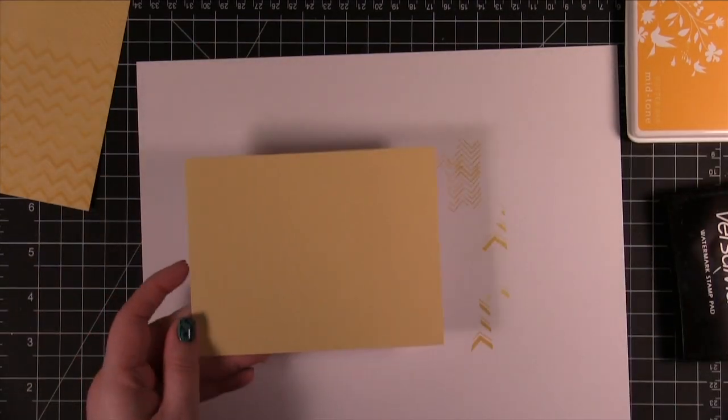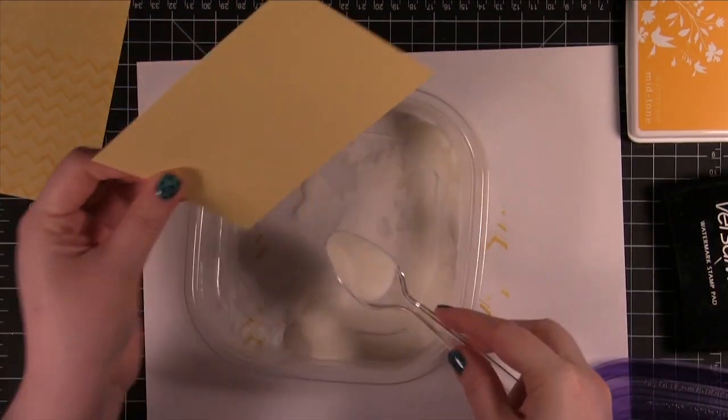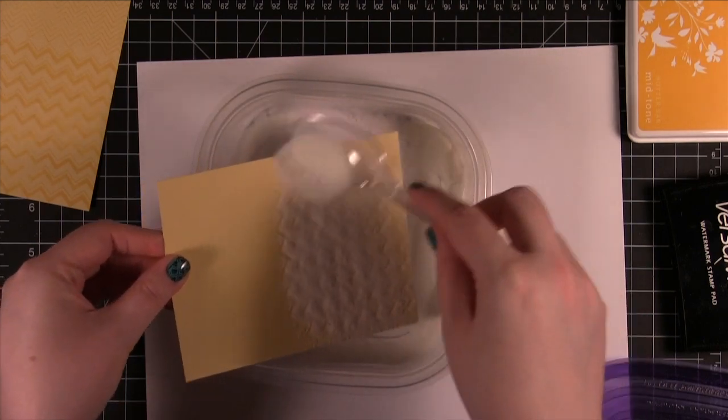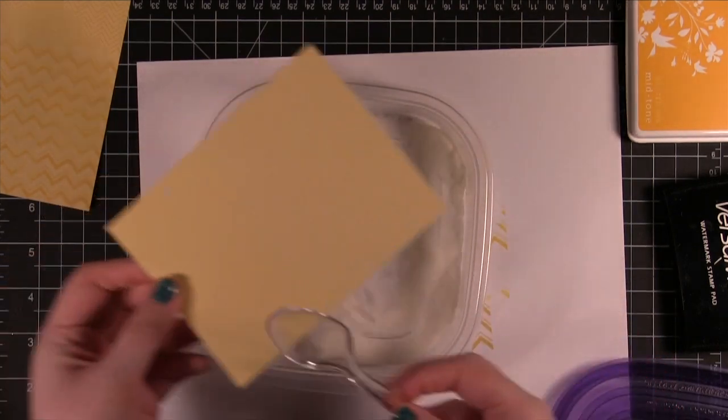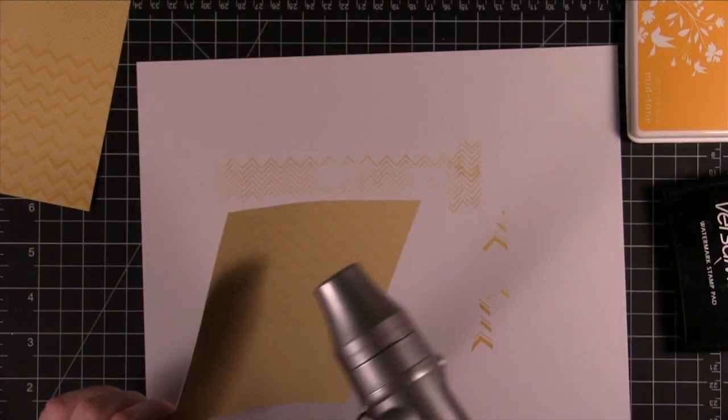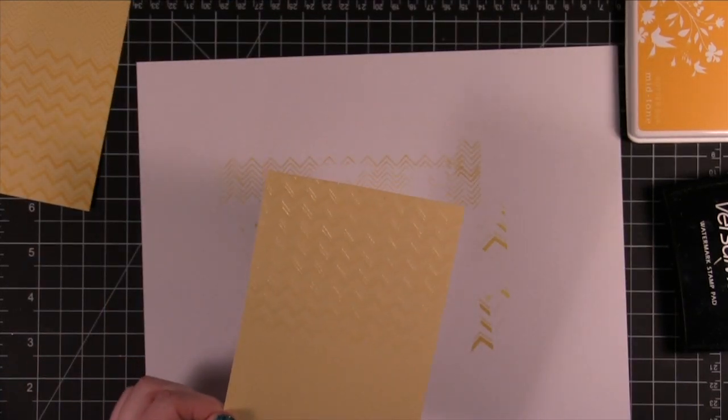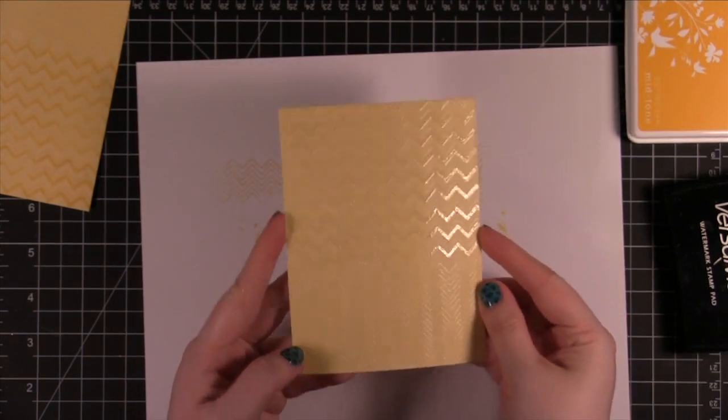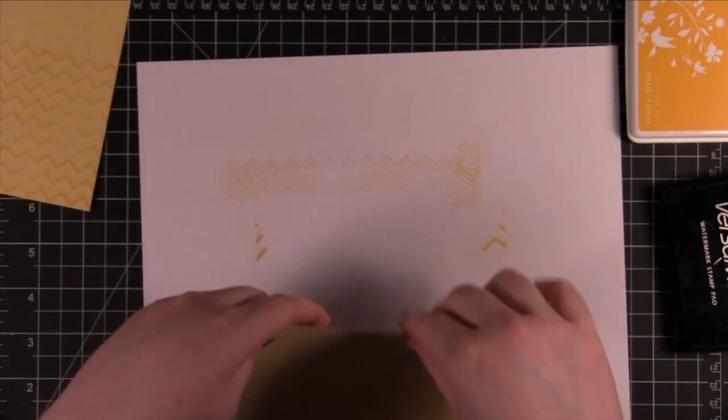Now I'm going to do clear embossing. All right, so I have this embossed. The pattern looks like that.